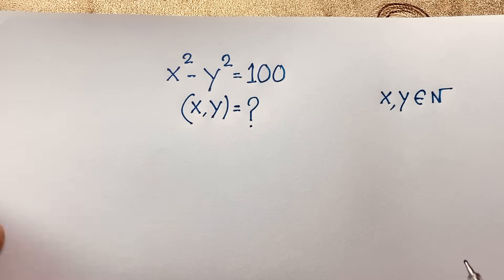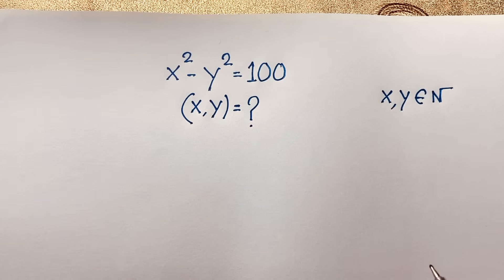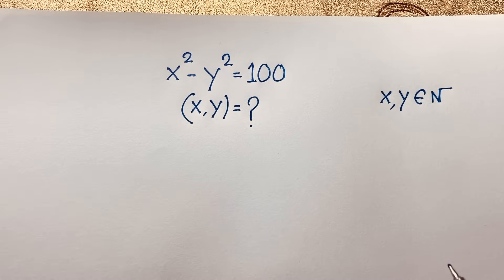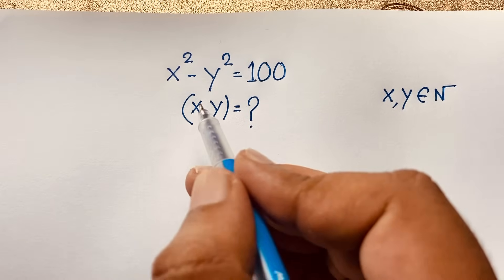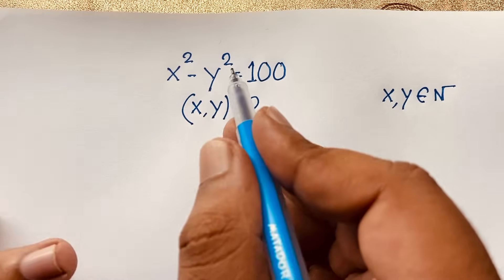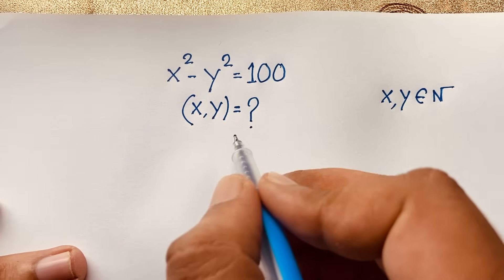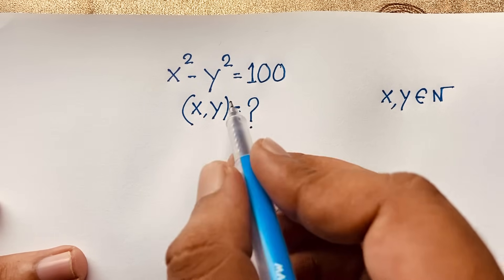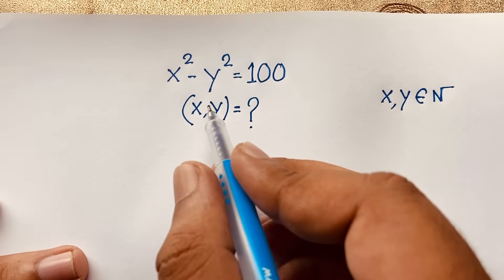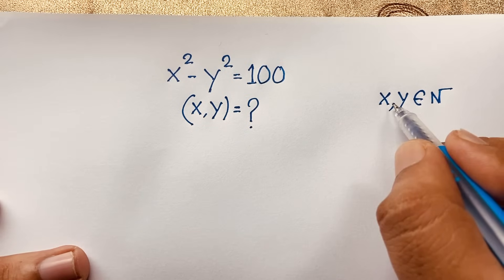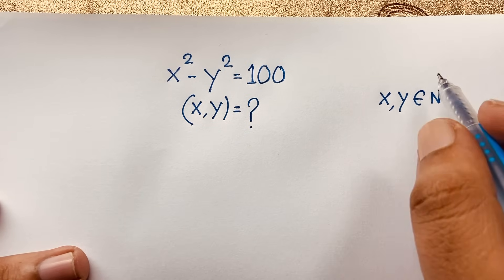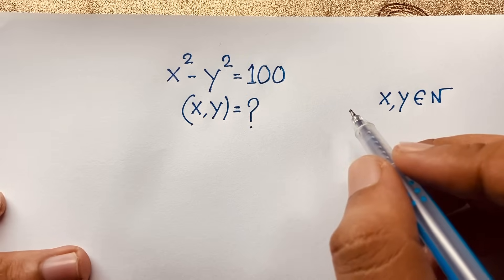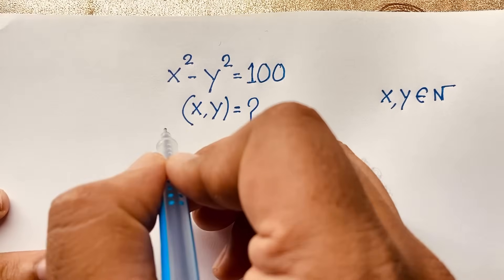Hello everyone, welcome to Ross's Classroom. Today we have a nice algebraic maths problem. The question is: x squared minus y squared is equal to 100, and x and y are natural numbers. How do we find the value of x and y? Let's solve this interesting maths Olympiad question.